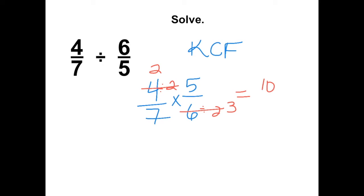2 times 5 is 10. 7 times 3 is 21. This can't be simplified. So that's our final answer.